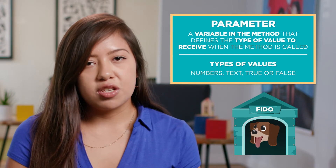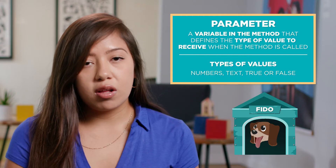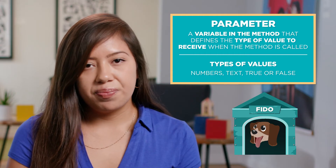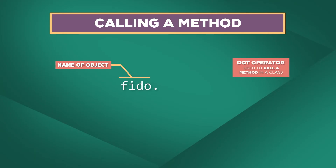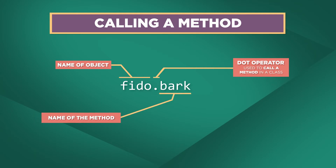When we want a dog object to bark, we call its bark method. To do this, we first state the name of the object, then we use the dot operator. The dot operator is used to call a method in a class. Then we say the name of the method we want to call.